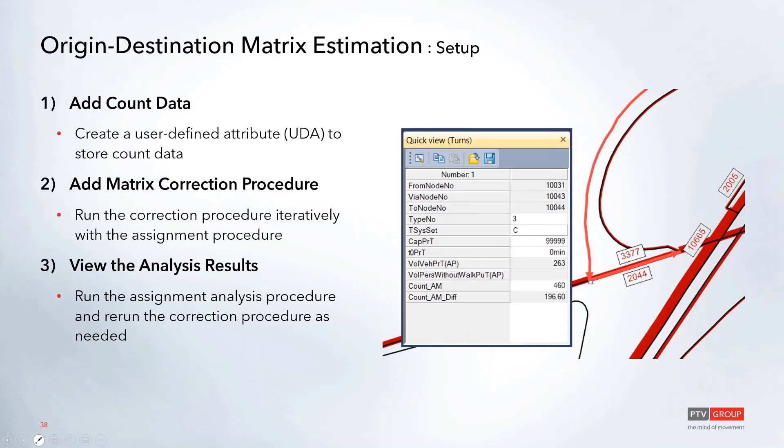To set this up, we'll first look at how to add count data to the network. We're going to use a User Defined Attribute, or UDA, to store all that information. Then we'll look at adding the matrix correction procedure within the procedure window, and finally at the results so we can compare the assigned volume to the counts.